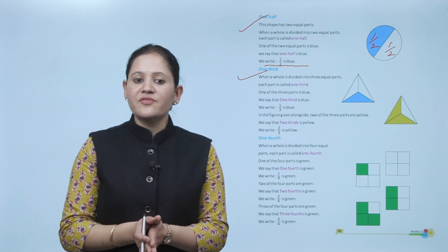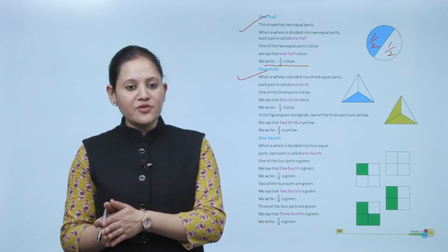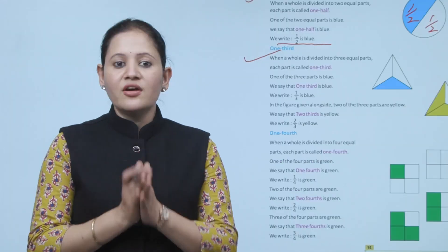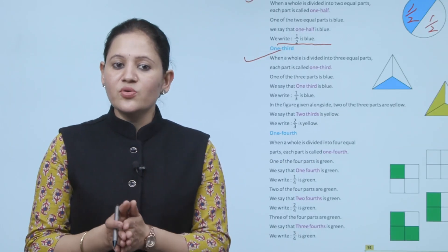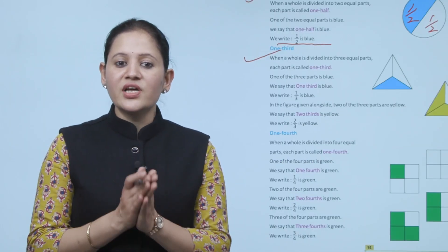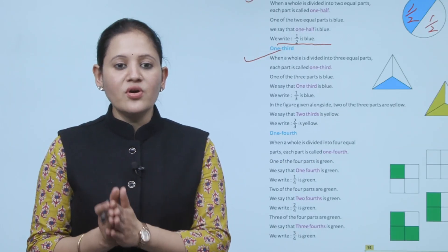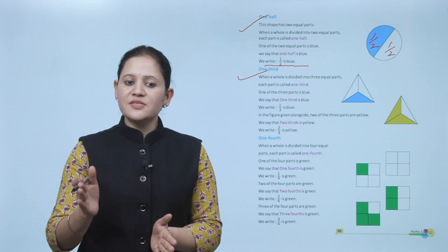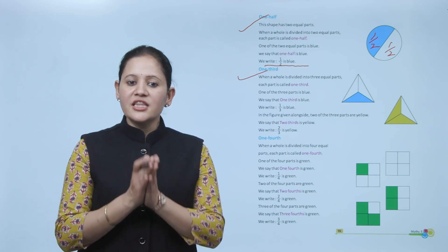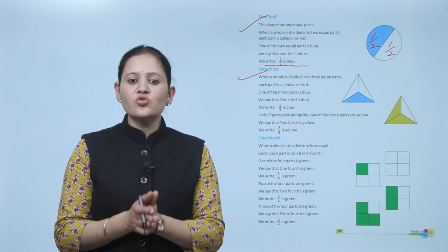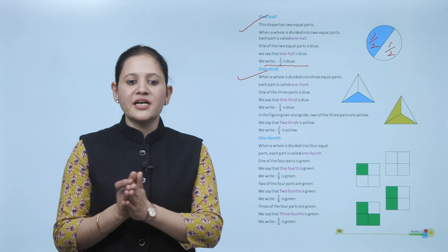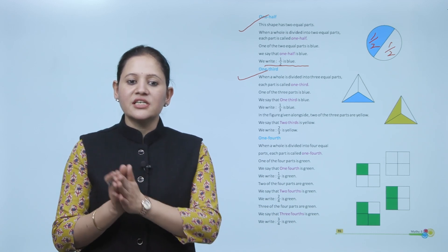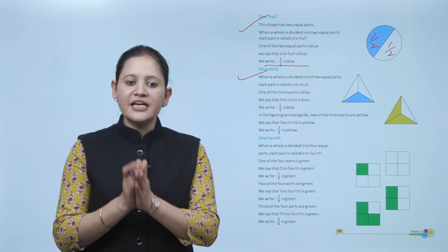One third: when the whole is divided into 3 equal parts, each part is called one third. One of the three parts is blue — we say that one third is blue, and we write it as 1 by 3. In the figure given alongside, 2 of the 3 parts are yellow — we say that 2 thirds is yellow, and we write it as 2 by 3.